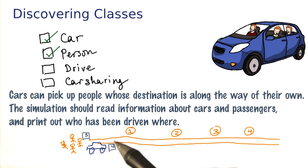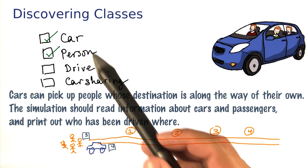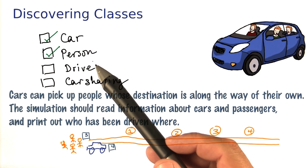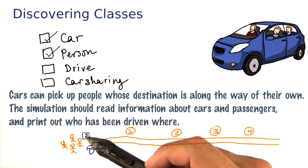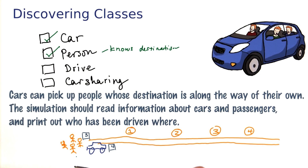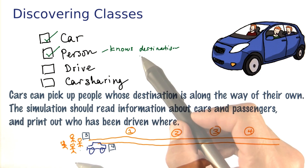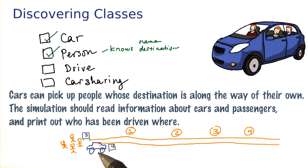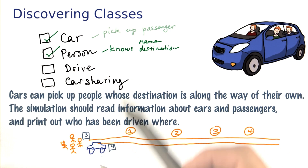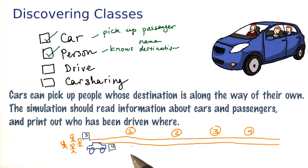So now we need to figure out what are the responsibilities of the classes. Let's start with the person class. A person should know their destination, and in our simulation we also want to give names to people, so of course the person should know that too. A car should be able to pick up a passenger — and only the car will know whether there's room and whether the destination is on the way. And of course a car should also be able to drive.